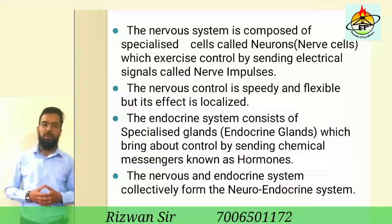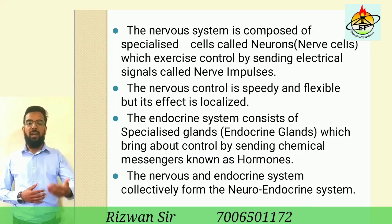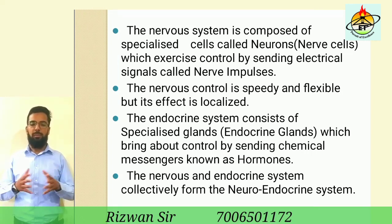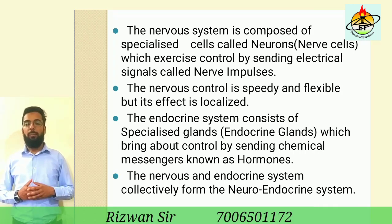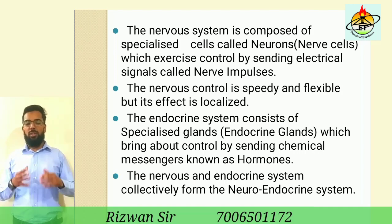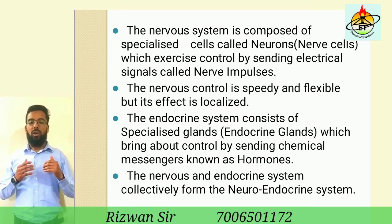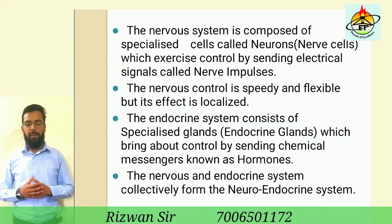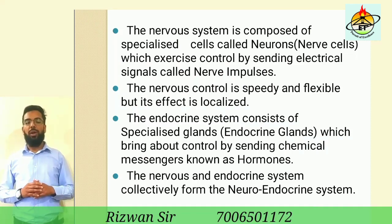The nervous system is composed of specialized cells called neurons or nerve cells, which exercise control by sending electrical signals called nerve impulses. The nervous control is speedy and flexible but its effect is localized. The endocrine system consists of specialized glands called endocrine glands, which bring about control by sending chemical messengers known as hormones. The nervous and endocrine system collectively form the neuroendocrine system.